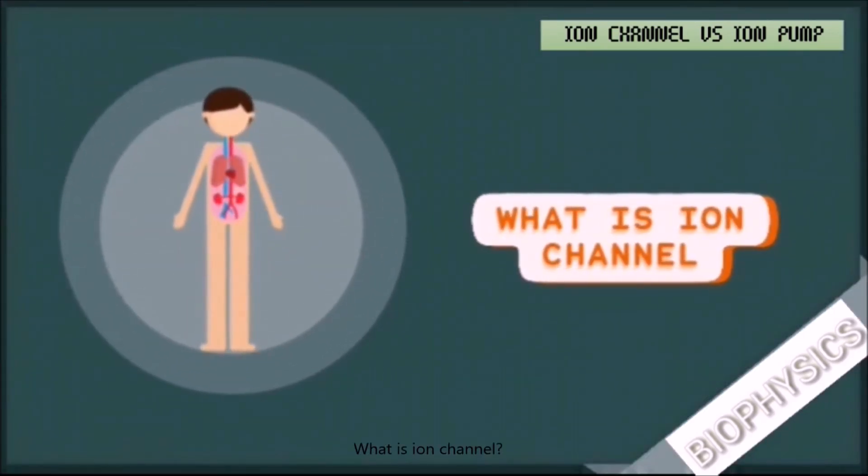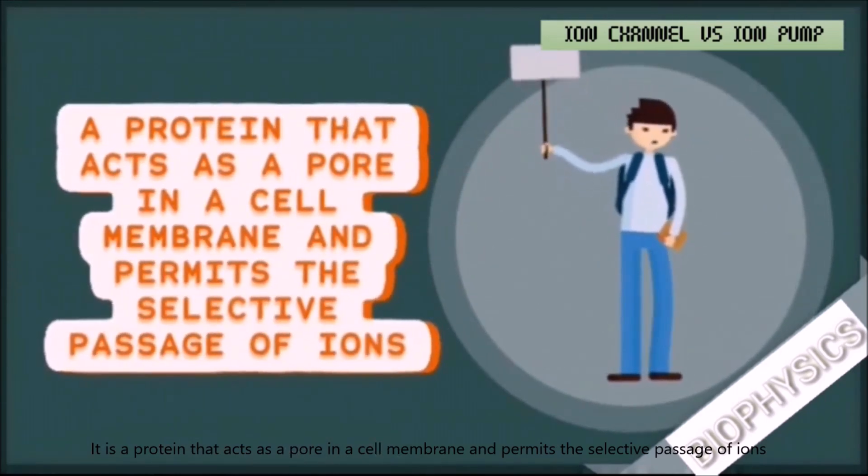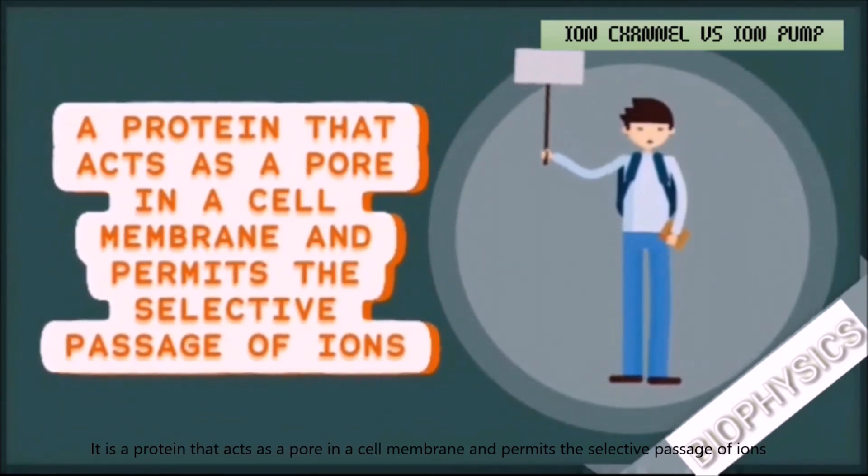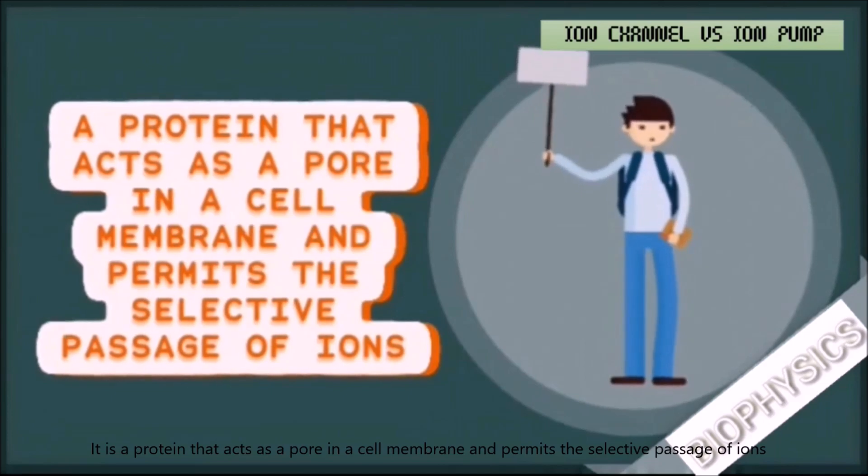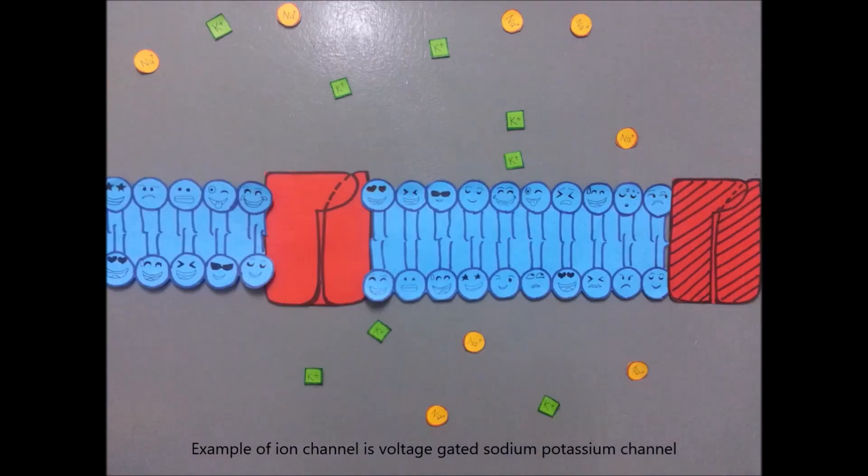What is ion channel? It is a protein that acts as a pore in a cell membrane that permits selective passage of ions. Example of ion channel is the voltage-gated sodium potassium channel.